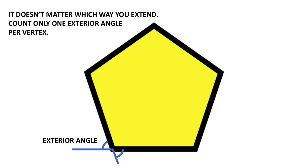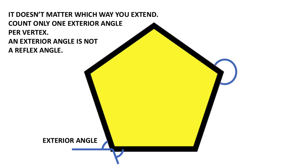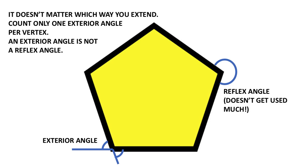The exterior angle is just part of the outside — it's not the same thing as a reflex angle. A reflex angle goes all the way around, which is more than 180 degrees. We don't actually use reflex angles much in our calculations for polygons. There are ways you can use them in problems — like if a reflex angle is 236 degrees, can you calculate what the interior angle would be that goes along with it? But other than that, you're not going to run into too many questions involving reflex angles.